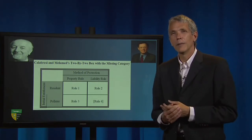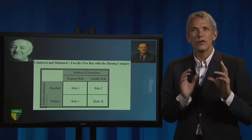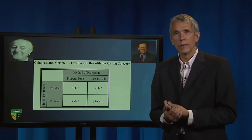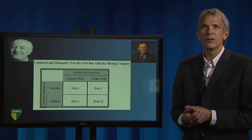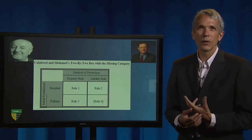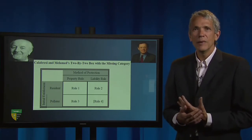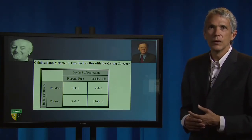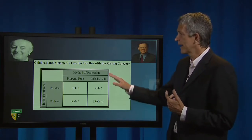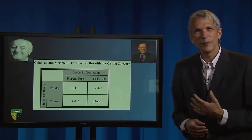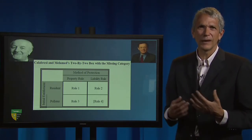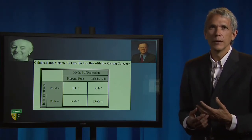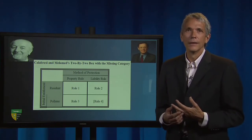Back to Calabresi and Melamed. This is the key moment where they used the two-by-two box to see a new rule. 'The very statement of these rules in the context of our framework suggests that something is missing. Missing is a fourth rule representing an entitlement in Taney to pollute, but an entitlement which is protected only by a liability rule. The fourth rule — really a kind of partial eminent domain coupled with a benefits tax — can be stated as follows: Marshall may stop Taney from polluting, but if he does, he must compensate Taney.'